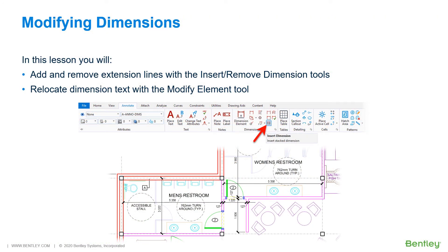When placing dimensions you may need to come back and modify or edit the dimension in one way or another to further embellish the design. It is possible to edit the dimension text of existing dimensions or to change its appearance by applying another dimension style. You can even modify the geometry of a dimension element by moving the dimension line or text, or by adding, moving, or removing extension lines.